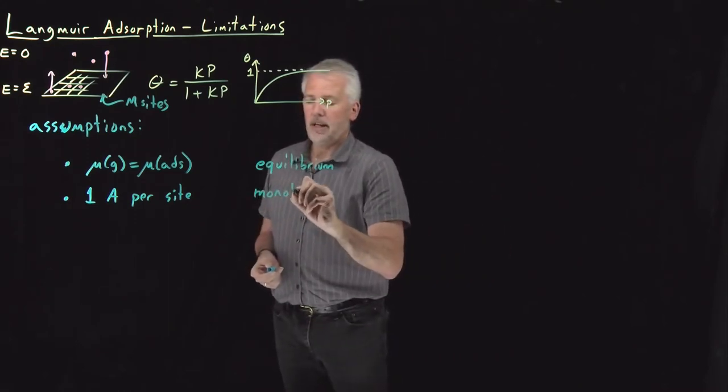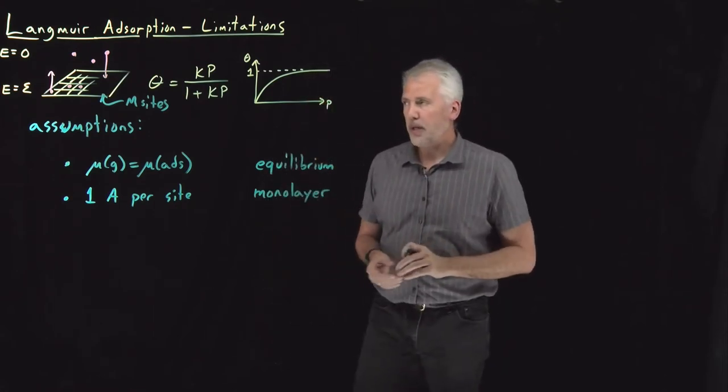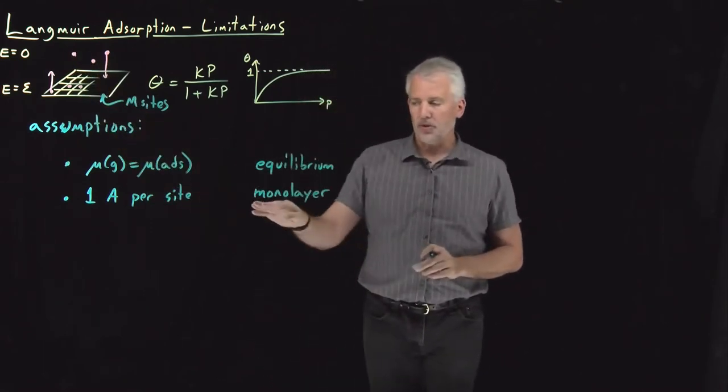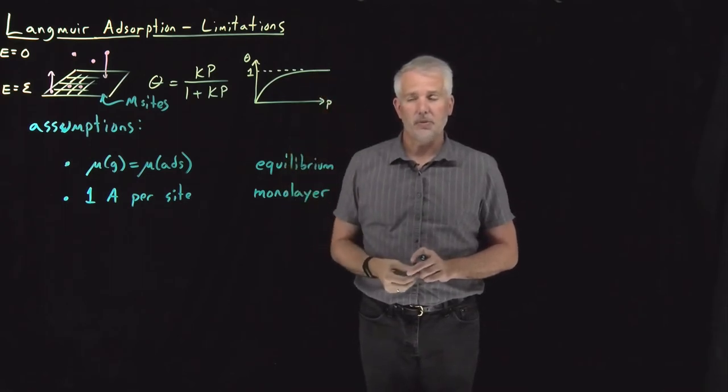But what that accounts for is the fact that I can fill those lattice sites with one molecule each, but I'm not going to allow other molecules to stack on top of the molecules that are already here. So we're assuming that we can never have more than a single monolayer of adsorption onto a surface.